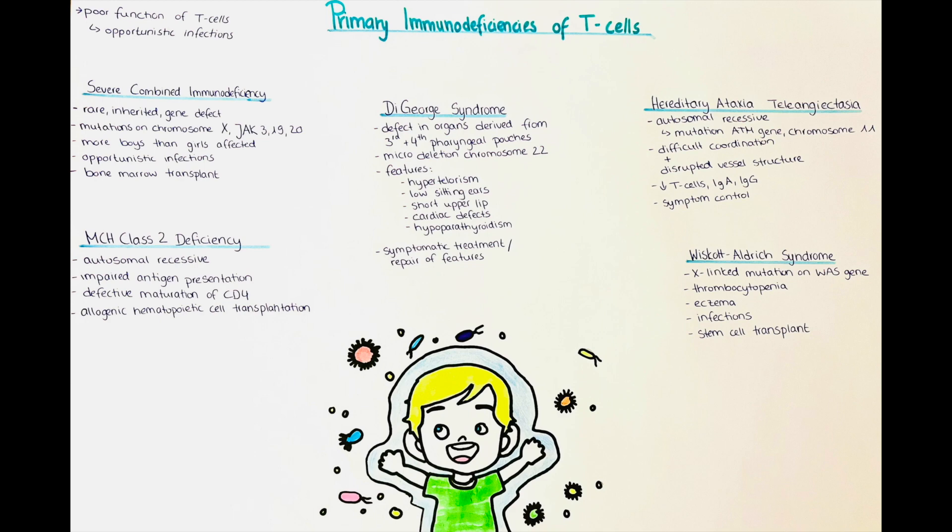The only curative therapy for Wiscott-Aldrich syndrome is a stem cell transplant. To memorize Wiscott-Aldrich syndrome, try remembering the word RIB: R for rash, I for infections, and B for bleeding — since the children typically present with bleeding, rash, and frequent pyogenic infections.